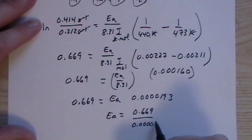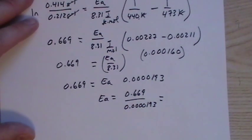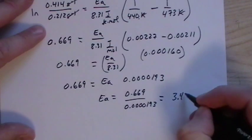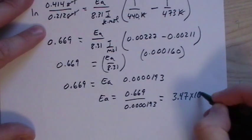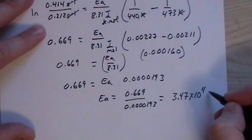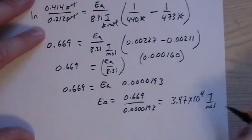And then what we have is 0.669 equals Ea over 8.31 times 0.000473. When I'm rounding, I round after each step, even though there's a lot of steps. That may throw us off from each other as far as our units of measure. Since this was joules per mole, that's what our answer here will be, joules per mole.